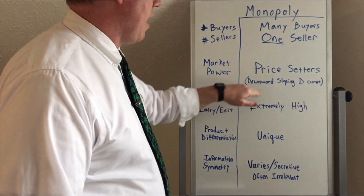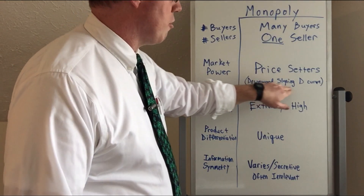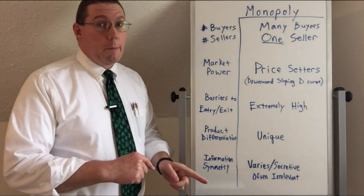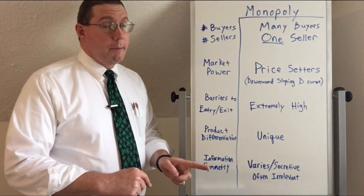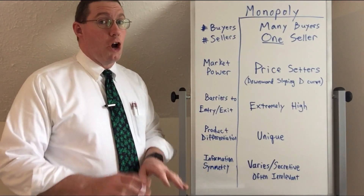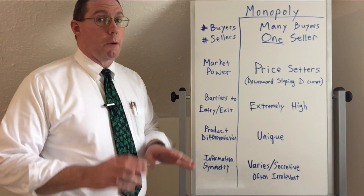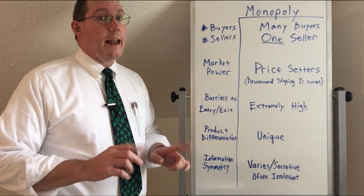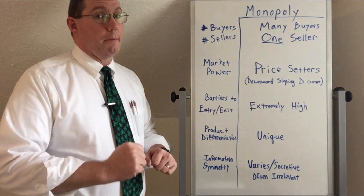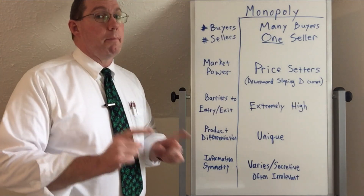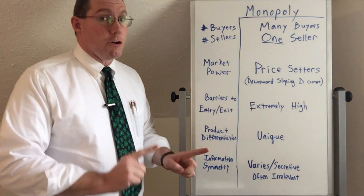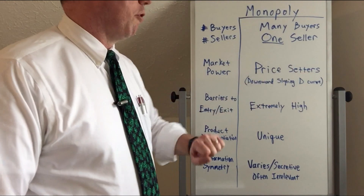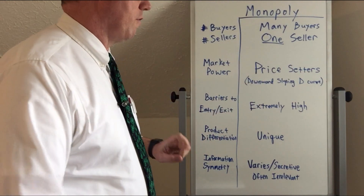Because monopolies are price setters, they have a downward sloping demand curve. Remember, in perfect competition, because sellers had no power at all, they were price takers with a horizontal demand curve. But price setters have a downward sloping demand curve, and we're going to see that here with monopoly.